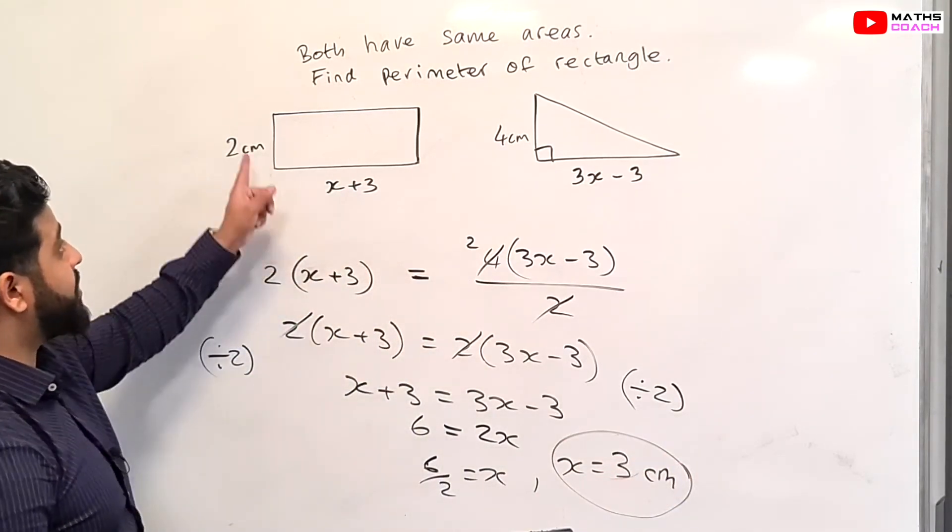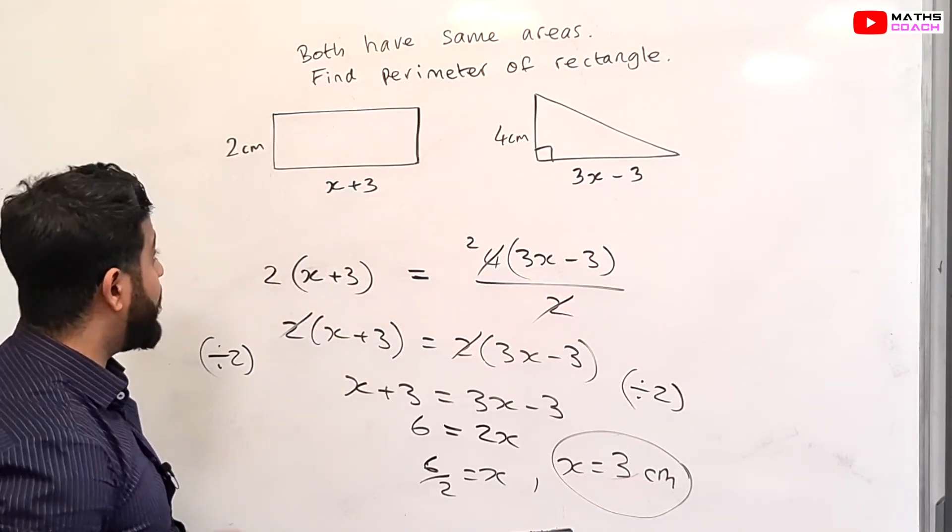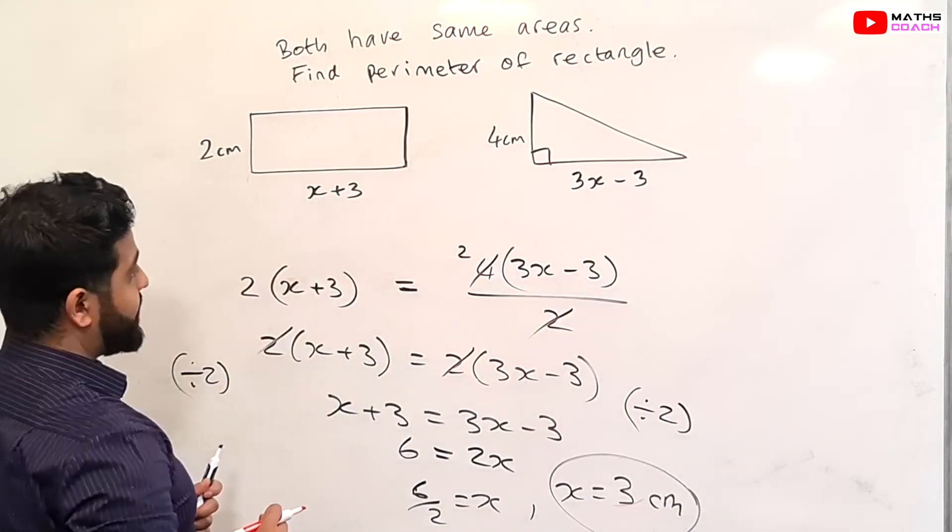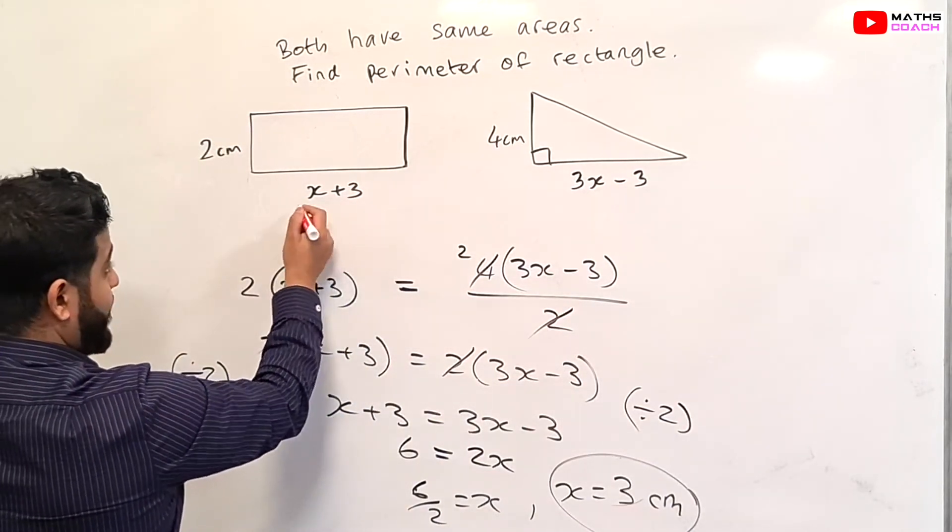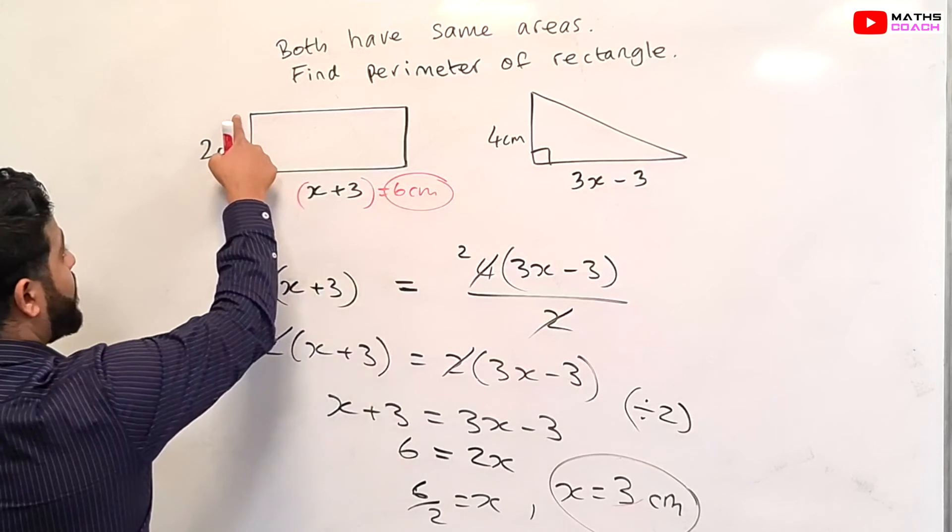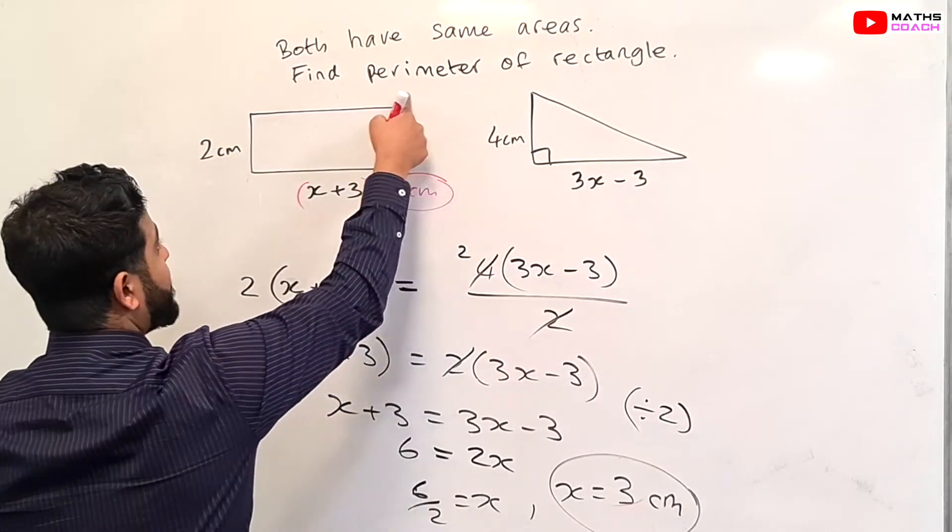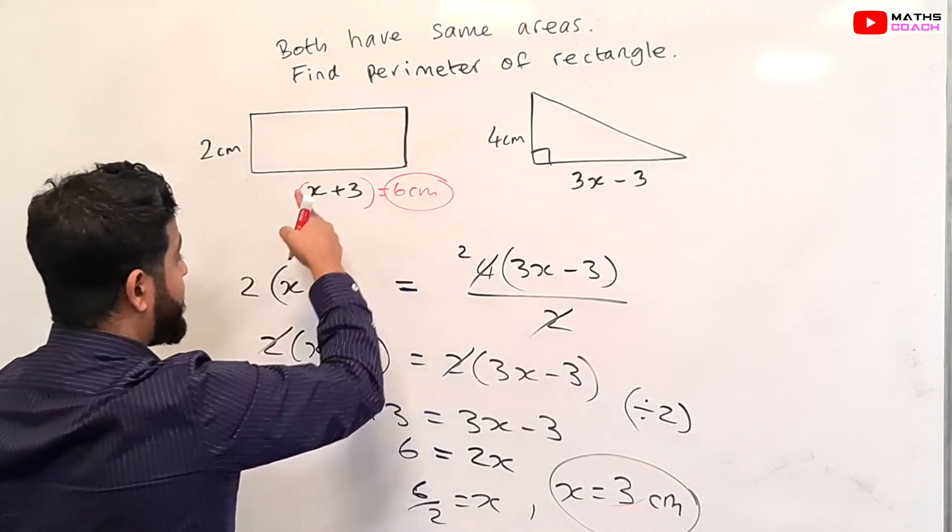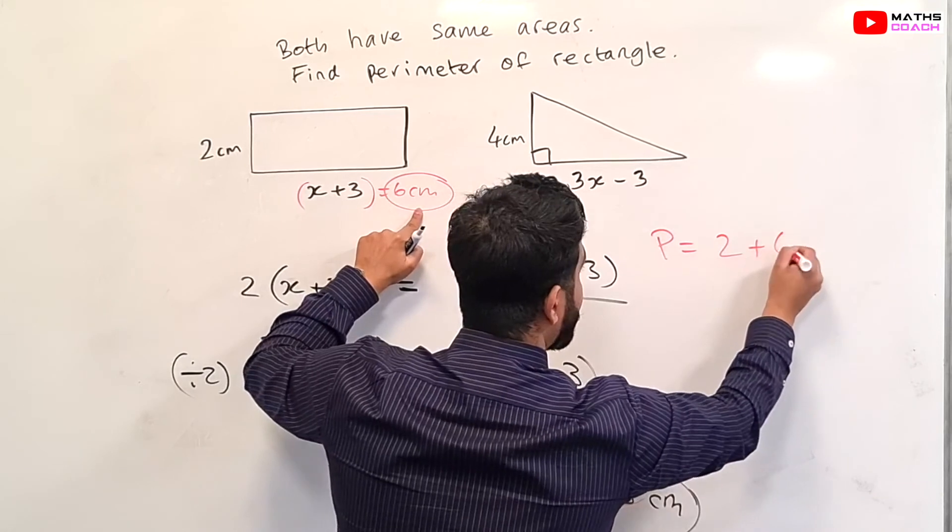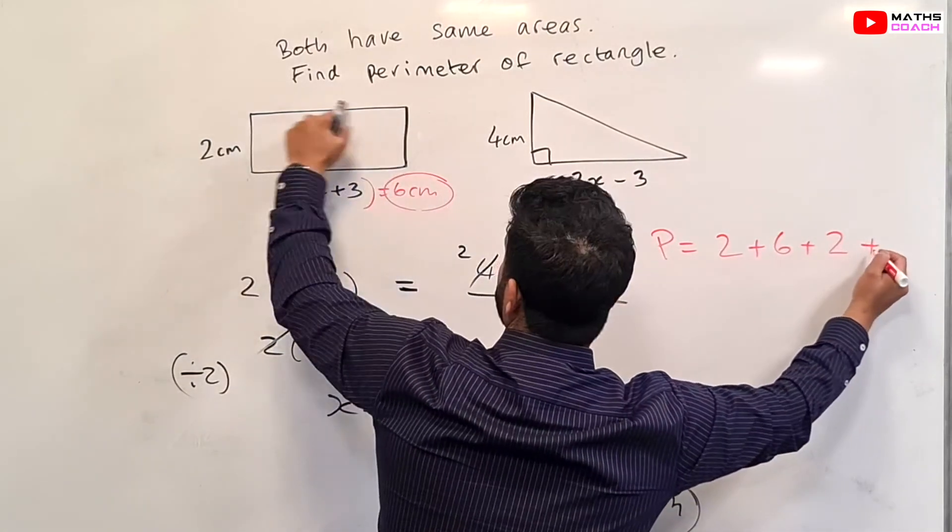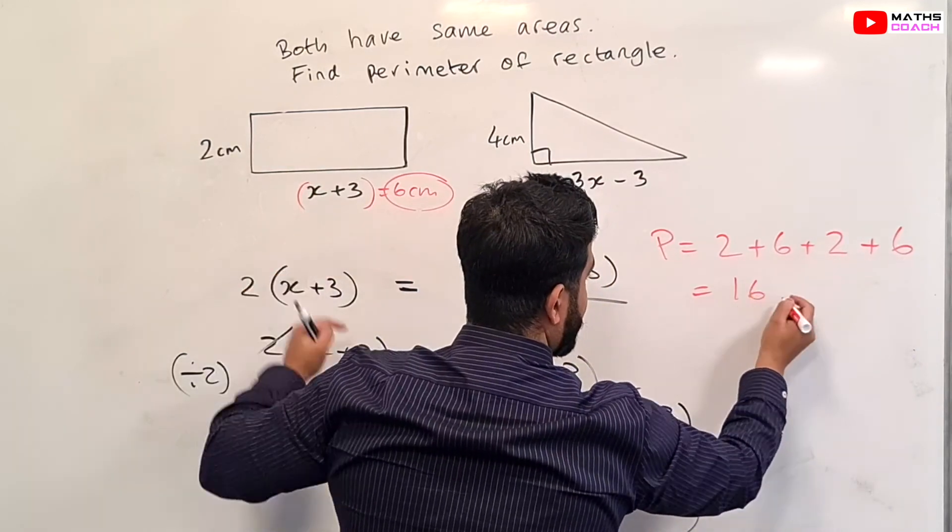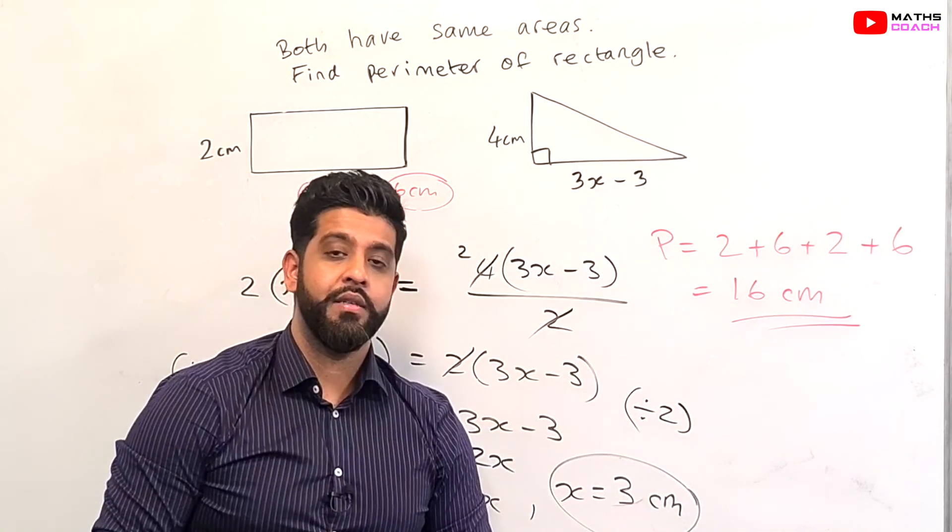Now, the question did say to find the perimeter of this rectangle. So we need to put in our X value and find the actual lengths. That's going to be 6 centimeters. So 2 centimeters plus 6 centimeters, 2 centimeters plus 6 centimeters gives us the perimeter. So perimeter equals 2 plus 6 plus 2 plus 6. 6 plus 6 is 12, 12 plus 4 is 16. So the perimeter is 16 centimeters.